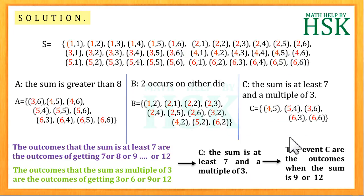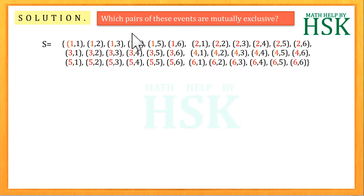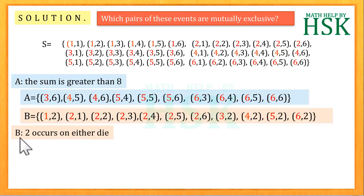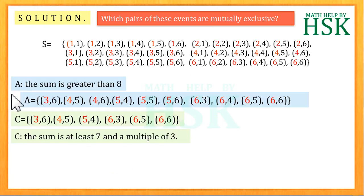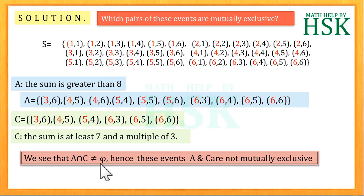After describing the events we have to tell which of the events are mutually exclusive. For this we take the events A and B. If we observe the events A and B, we see that they have no outcomes in common, therefore A intersection B is equal to phi, hence events A and B are mutually exclusive. Again, if we take the events A and C, we see that they have (3,6), (6,3), (6,6) as common outcomes, therefore A intersection C is not equal to phi, hence the events are not mutually exclusive.